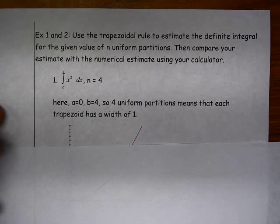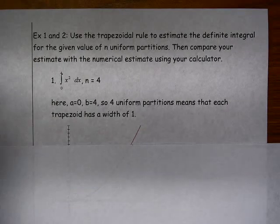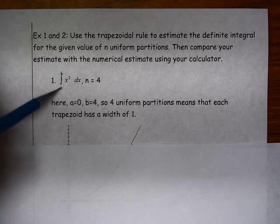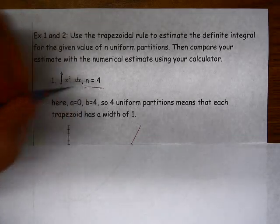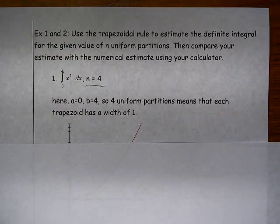We're going to do two examples. The first example is the definite, we're going to estimate the definite integral from 0 to 4 of x squared dx with 4 uniform partitions.